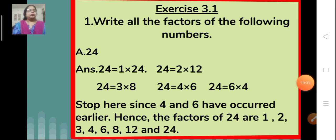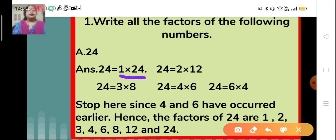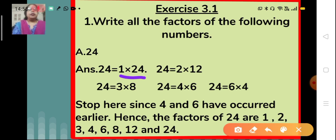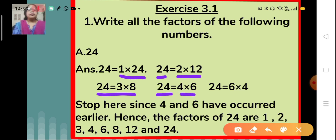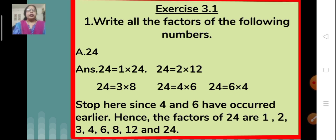So, what are these pairs? They are 1 multiplied by 24, because every number has 2 factors — that is 1 and the number itself. Then 2 multiplied by 12 is 24, then 3 multiplied by 8 is 24, and 4 multiplied by 6 is 24. We stop here because 4 and 6 have occurred earlier. So the factors of 24 are 1, 2, 3, 4, 6, 8, 12 and 24.